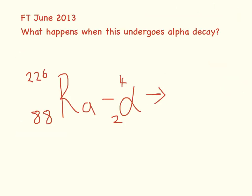Exactly the same thing here. Top row maths first: 226 minus 4 equals 222, and then 88 minus 2 equals 86. This is the number we need to look up on our periodic table and it is radon.